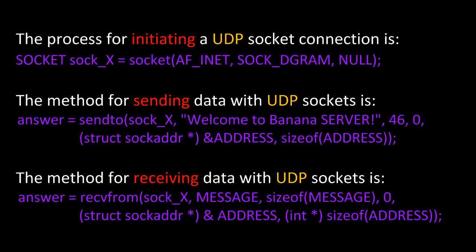UDP transmission is useful for applications like video streaming or internet radio stations, where a great deal of data has to be sent using as little bandwidth as possible, and it is not really imperative that each packet arrive intact at its destination, and a few dropped frames can be tolerated. The process for initiating a UDP socket connection requires passing the argument SOCK_DGRAM. The method for sending data with UDP sockets is to use sendTo instead of send, and for receiving data, use recvFrom instead of recv.